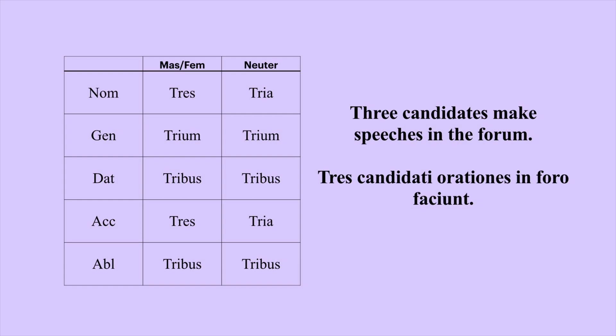Here we see tres in a sentence: 'Three candidates make speeches in the forum' — or 'Three candidates are making speeches in the forum.' And that is how we use cardinal and ordinal numbers in Latin. Valete!